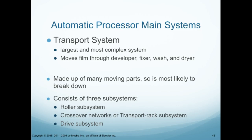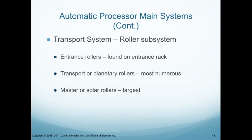The transport system consists of three subsystems: a roller subsystem, a crossover network, or transport rack subsystem, and then a drive subsystem. The roller subsystem has entrance rollers found on the entrance rack, transport rollers which are the most numerous rollers within the unit, and then the master or solar rollers, which are the largest at the end.